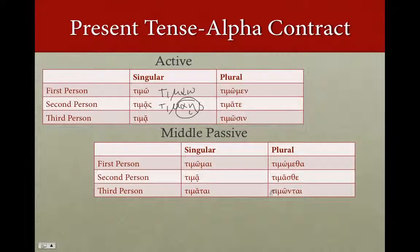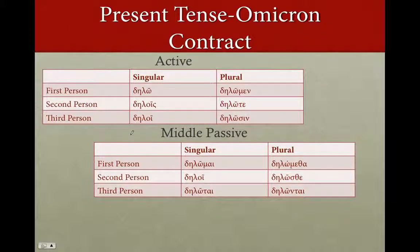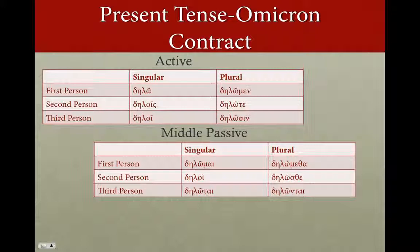You'll notice a lot of these actually look like the indicative. The thing that's going to keep you sane is that the subjunctive is only used in certain situations. Omicron contracts also have that problem — they look a bit like the indicatives. So watch out for epsilon, alpha, and omicron contracts, but the endings generally are going to be pretty consistent.